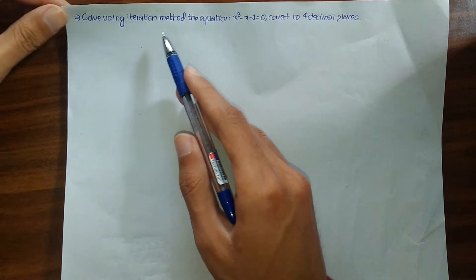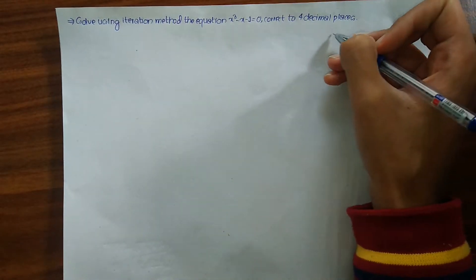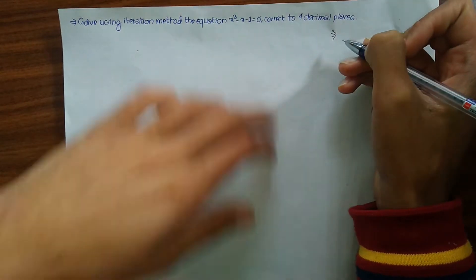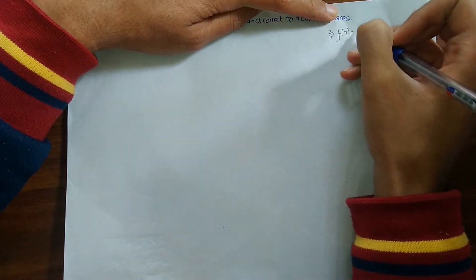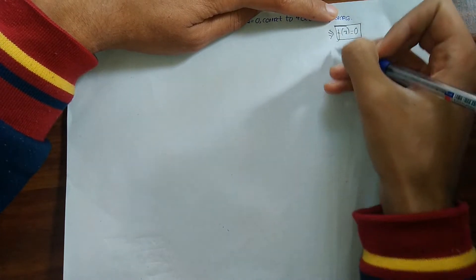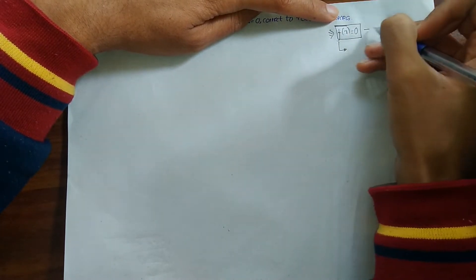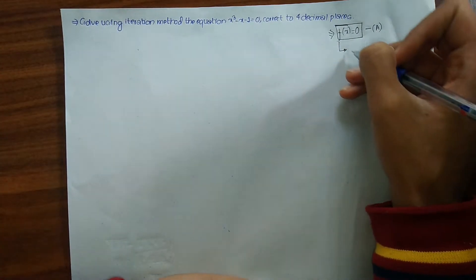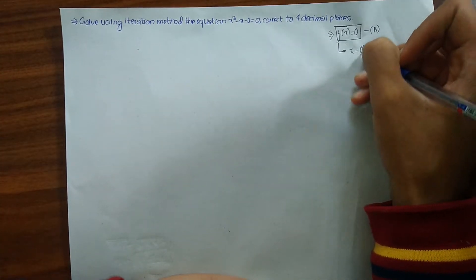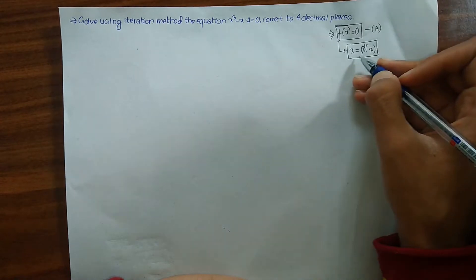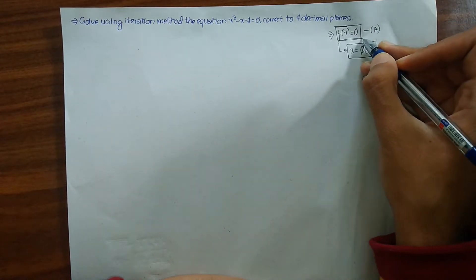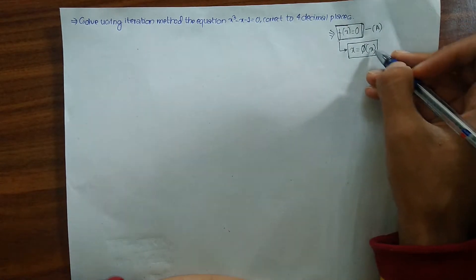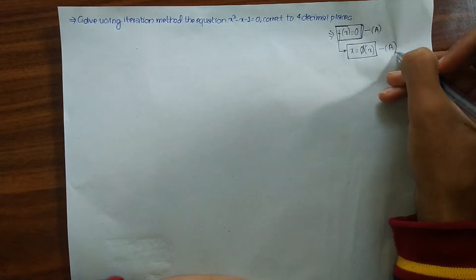Before jumping into the solution, let me explain the iteration method. If we have an equation f(x) = 0 — call this equation (a) — then in the iteration method we rewrite this equation so that x = φ(x). So x = φ(x) is simply equation (a) rewritten in that form. Let me call this equation (b).